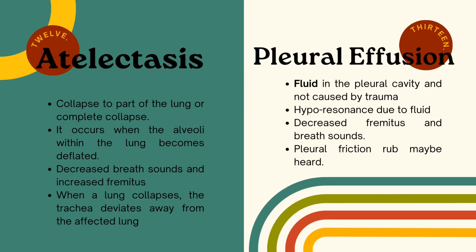Then we have atelectasis, which is a collapse of part of the lung or a complete collapse. It occurs when the alveoli within the lung become deflated. You will find decreased breath sounds and increased fremitus. It's also important to note that when a lung collapses, the trachea will deviate away from the affected lung.